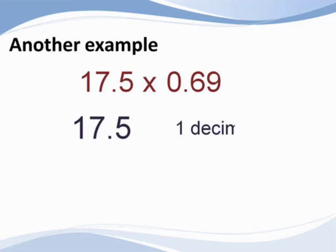Let's look at another example: 17.5 times 0.69. Seventeen and five-tenths has one number to the right of the decimal point.